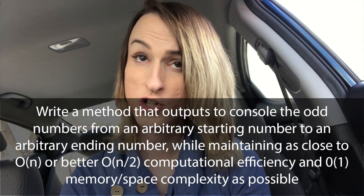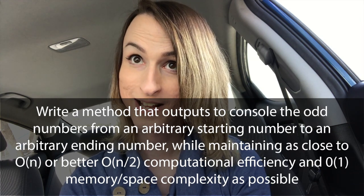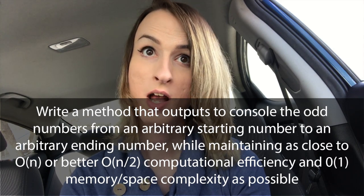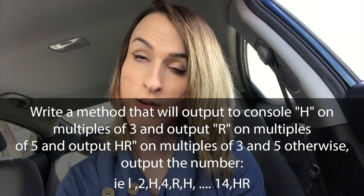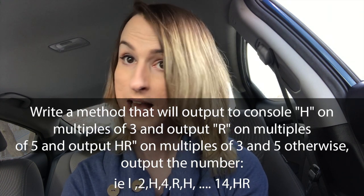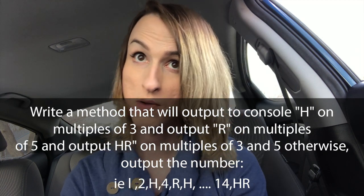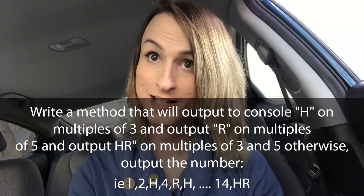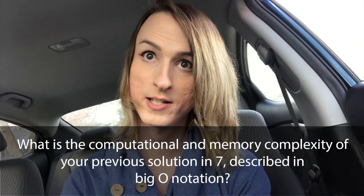Question four: write a method that outputs to the console the odd numbers from an arbitrary starting number to an arbitrary ending number, while maintaining as close to O(n) or better O(n/2) computational efficiency and O(1) memory space complexity as possible. Question five: write a method that will output to the console 'H' on multiples of three, 'R' on multiples of five, and 'HR' on multiples of three and five — otherwise output the number.